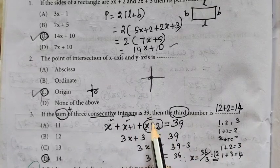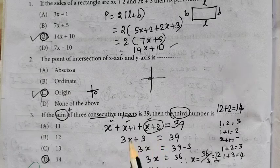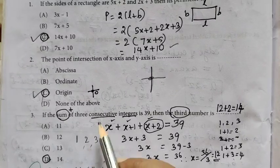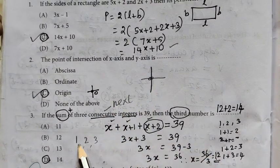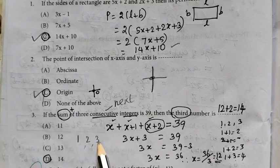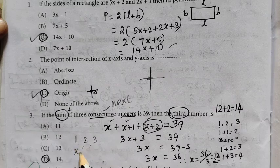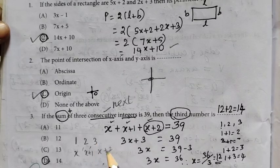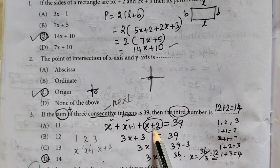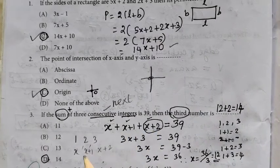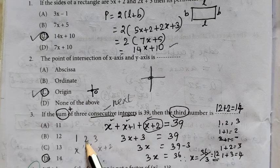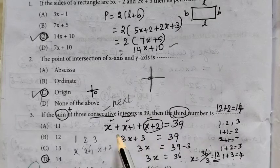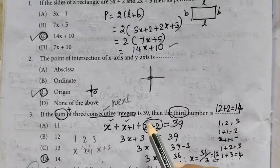Question 3: If the sum of 3 consecutive integers is 39, then the third number is... Consecutive means next, next, next. Let the first number be x, next number is x plus 1, next number is x plus 2. So these are 3 consecutive numbers and the sum is 39.